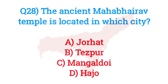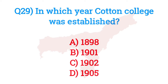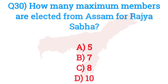Question number twenty-eight: The ancient Mahabhairab temple is located in which city? The answer is option B — Tezpur. Question number twenty-nine: In which year was Cotton College established? The answer is option B — 1901. Question number thirty: How many maximum members are elected from Assam for the Rajya Sabha? The answer is option B — seven.